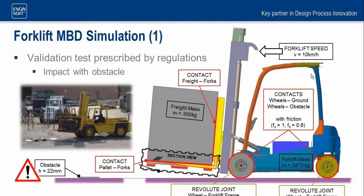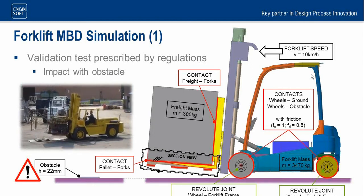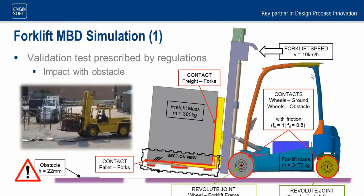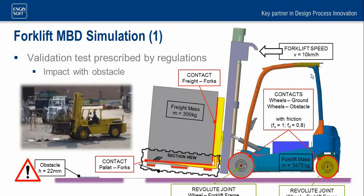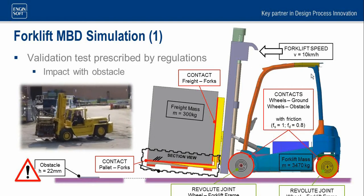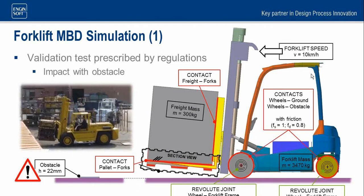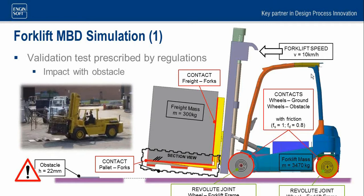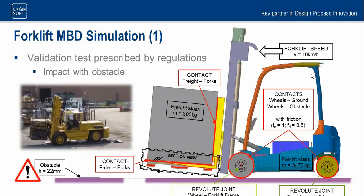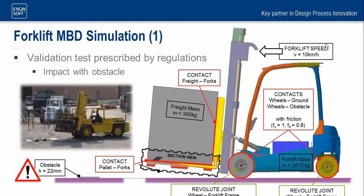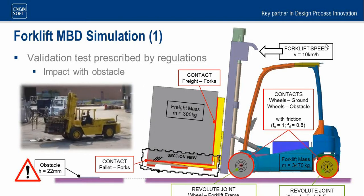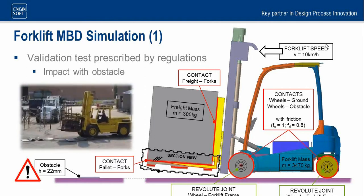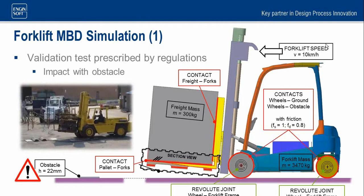In order to be validated, a prototype has to overcome multiple experimental tests. The failure of even one single test involves deep design modifications with unavoidable project delays and, of course, an exponential increase in development costs. In particular, one of the validation tests involves the forklift truck proceeding at about 10 kilometers per hour at constant velocity and crossing a test obstacle placed on its way.